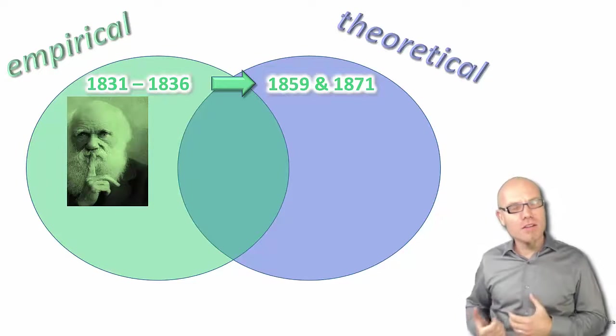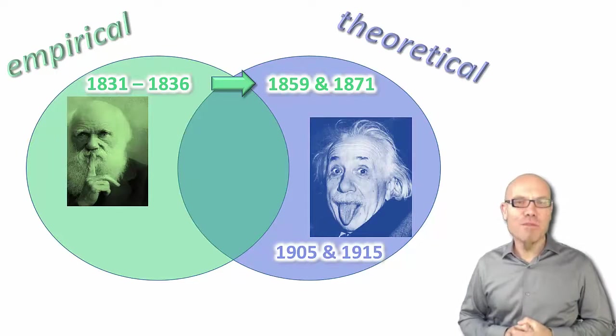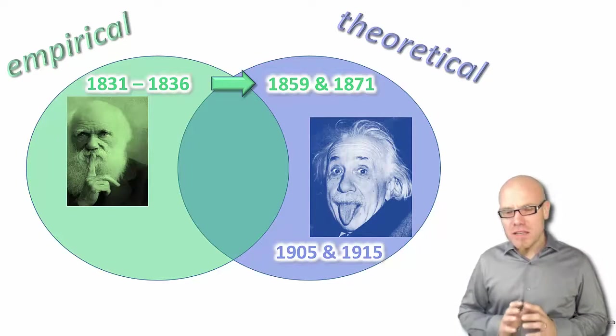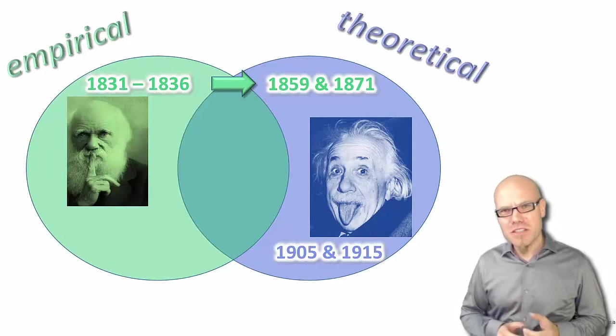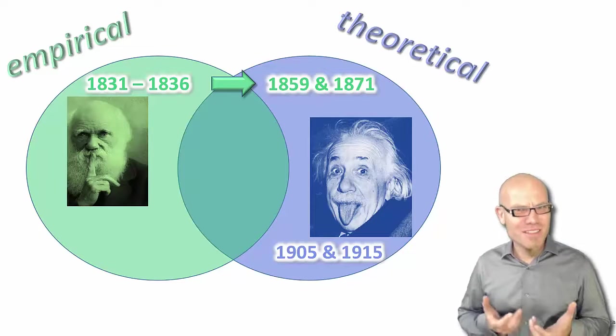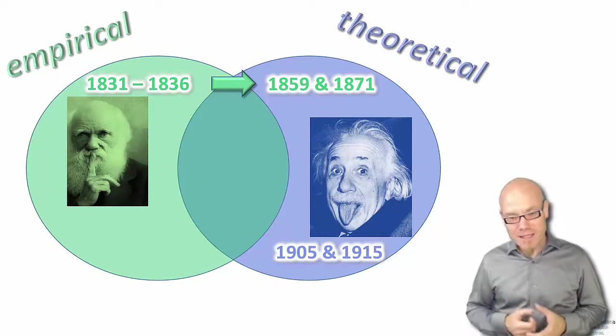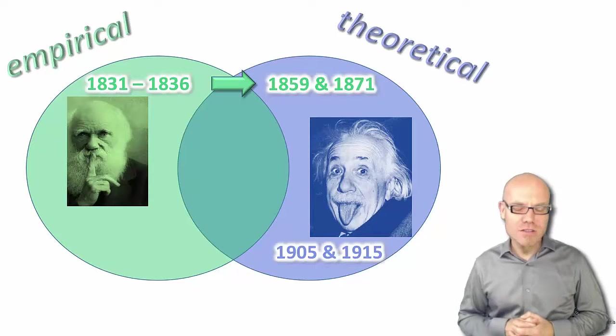Another example, the other way around, is this guy here, Albert Einstein. He was not necessarily very much interested in making observations. He was not an empiricist, he was a theorist. Back in these days, 1900, early 1900, turn of the century, there was a big hypothesis that the speed of light is constant.